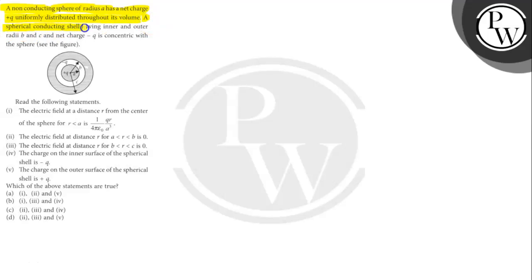A spherical conducting shell having inner and outer radii B and C and net charge -Q is concentric with the sphere. Read the following statements. Which of the above statements is true? Let's find out.